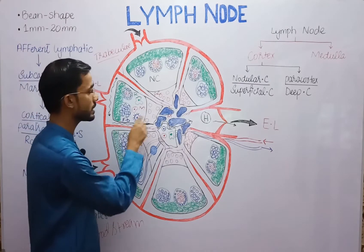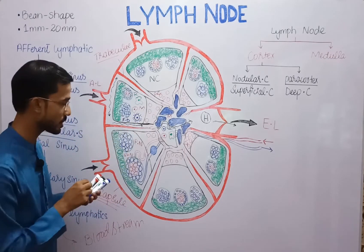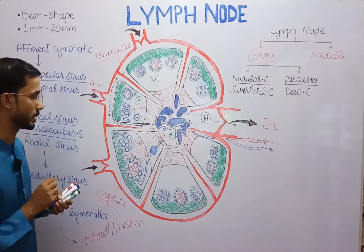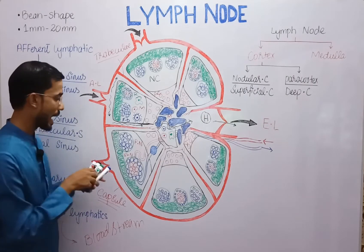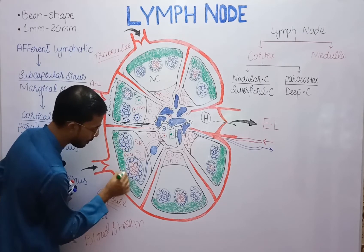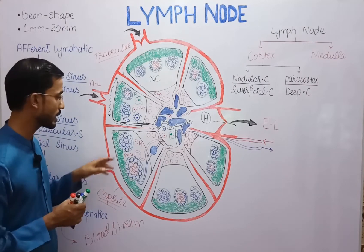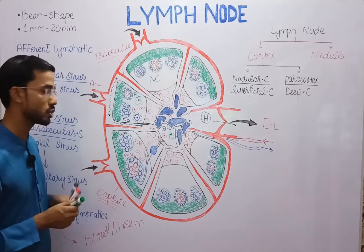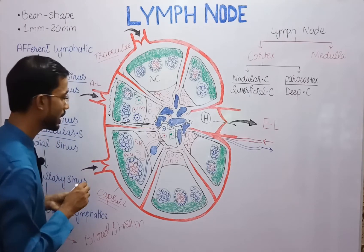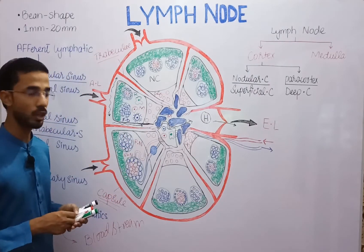Next is the paracortex region, which is the deep region. Several T lymphocytes are present in it. The region above the nodular cortex is the marginal zone.